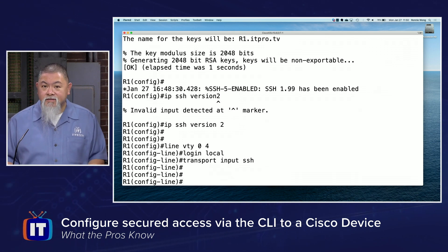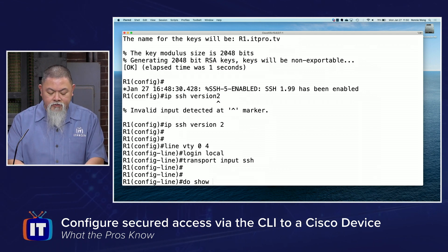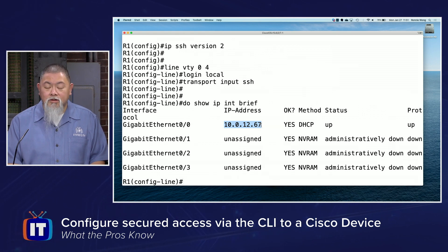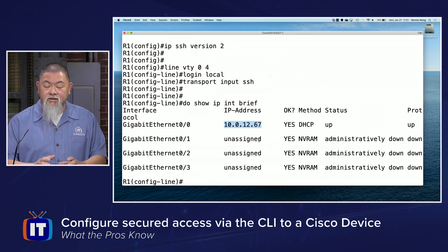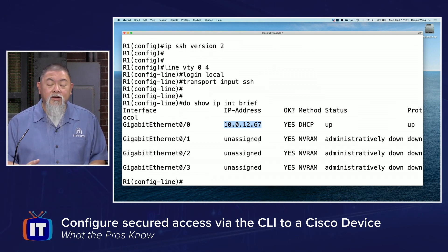Now that we have access limited, I need to see how I'm going to access this device. I'll do show IP interface brief, and here's the IP address I'll be using: 10.0.12.67. If you wanted to make it even more secure by limiting access to a single computer or subnet, you could create an access control list. But that would prevent remote access across networks, so I'm not going to do that here.